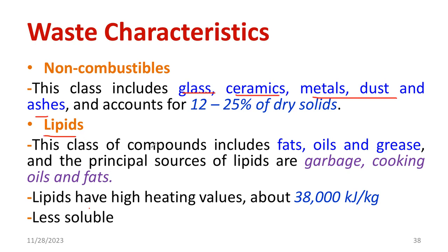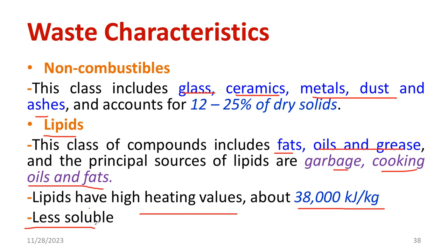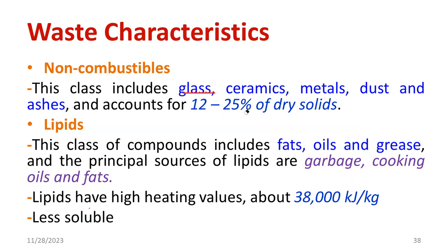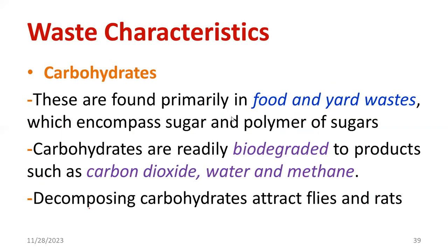Lipid is another important chemical characteristic. What is a lipid? Lipid is actually some waste like oil — suppose vegetable oils, fats, and grease. The auto industries generate bulk amounts of grease as waste. So more amount of lipid content is available especially from cooking, garbage, oil, and fats. Lipid has a high heating value — it is about 38,000 kilojoules per kilogram. But it is less soluble and may lead to water pollution — it creates a layer in the water body, oxygen content gets reduced, and it affects aquatic organisms.